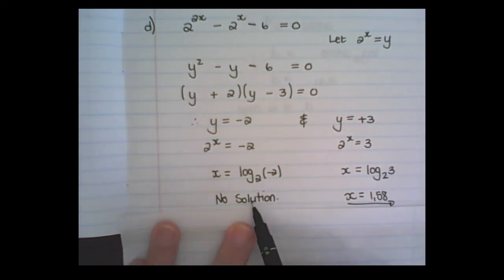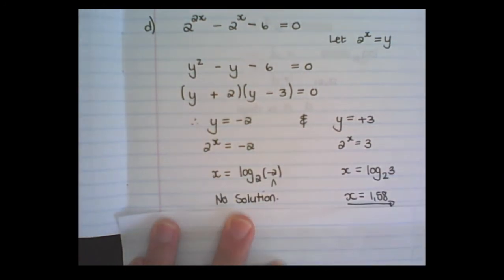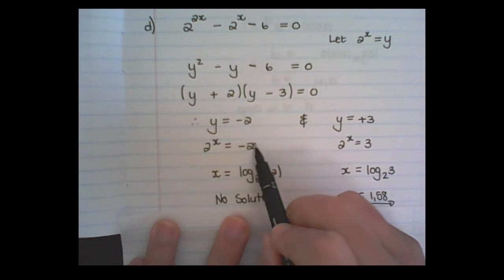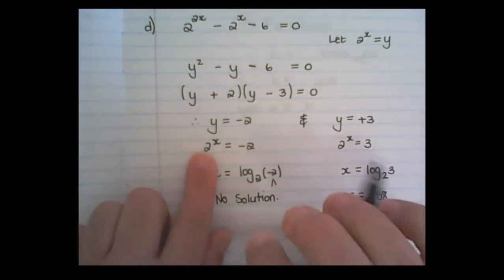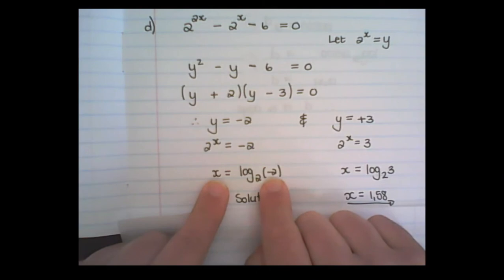This value will produce no solution, because the argument is a negative value. And remember, the rules are, that this must be a positive value. Another way to see it, there is no way I can write negative 2 to the power of something to get a positive value. So already here, we could see that there would be no solution. But it's okay to write it as a log, and see that that is a negative value, and therefore it produces no solution.